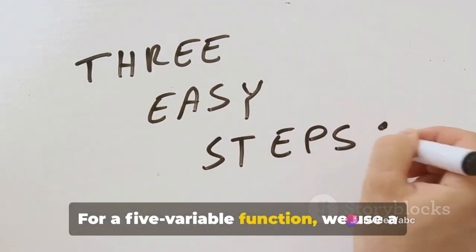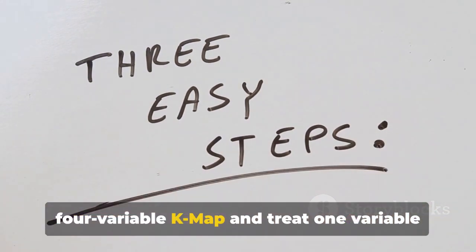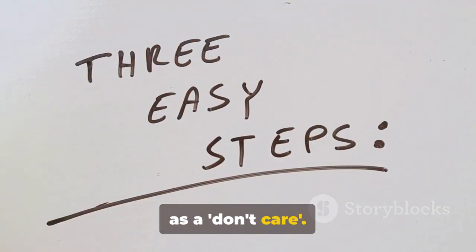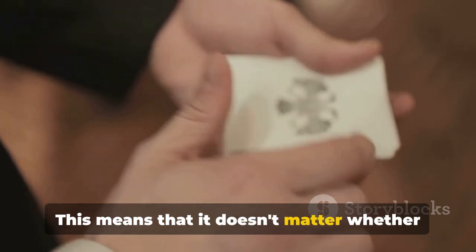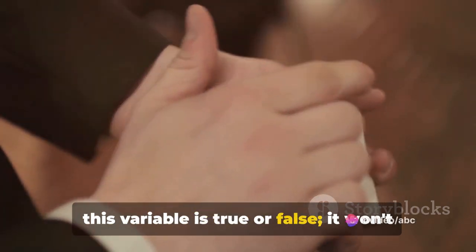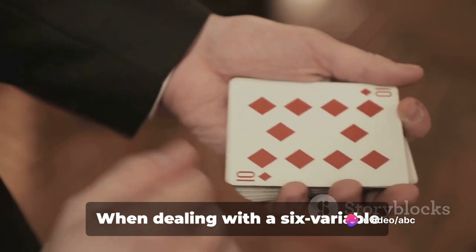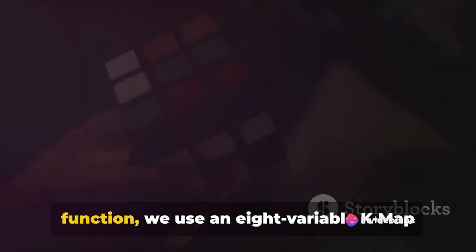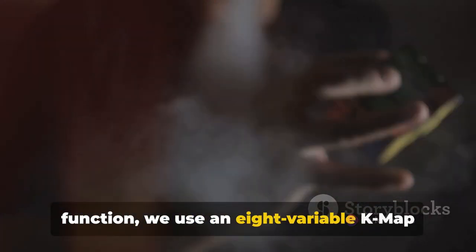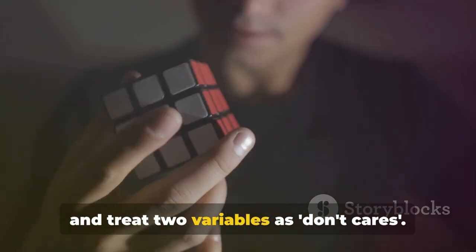For a 5-variable function, we use a 4-variable K-Map and treat one variable as a don't care. This means that it doesn't matter whether this variable is true or false. It won't affect the outcome of the function. When dealing with a 6-variable function, we use an 8-variable K-Map and treat 2 variables as don't cares.